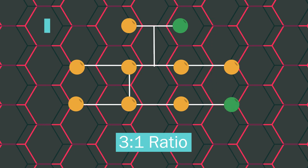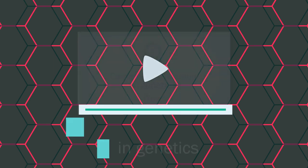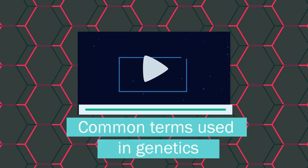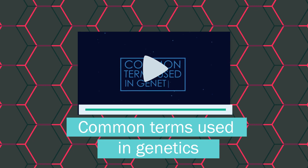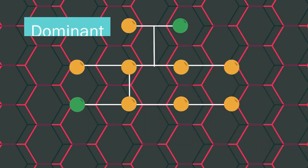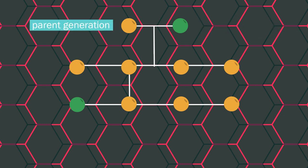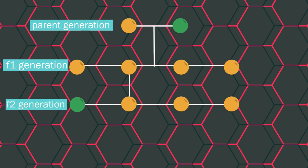Mendel had discovered dominant and recessive genes. Watch our video on common terms used in genetics if you aren't sure about dominant and recessive genes and alleles. The gene for yellow pods is dominant, and the green pod gene is recessive. Notice how we have the parent generation, and then the first generation is called F1, and the second generation is called F2.